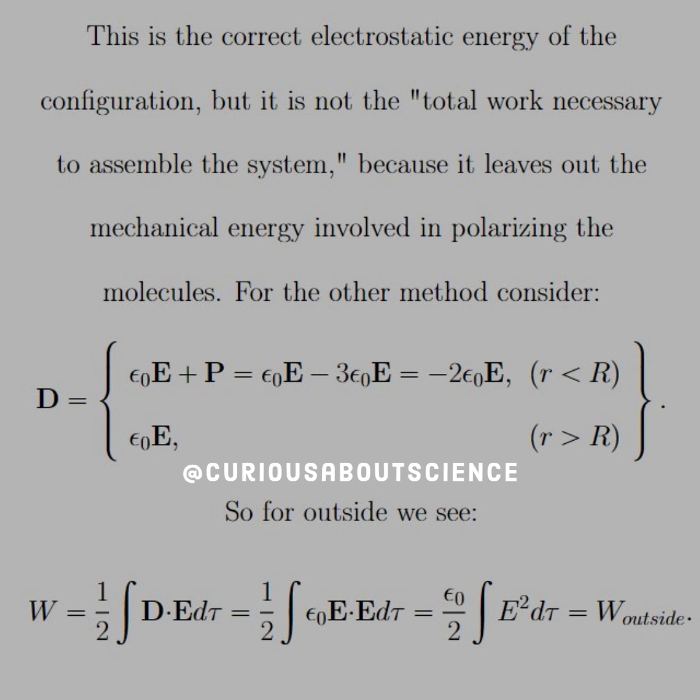And outside, it's just epsilon naught E. So, when we take the dot products, we split them into their respective regions. And we note that since D is equal to epsilon naught E, the outside integral is equal to the outside integral of the first method.